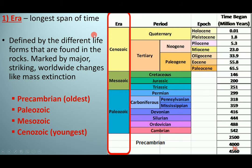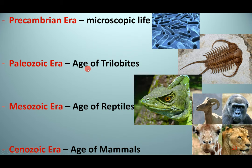An era is the longest span of time. The four eras you need to know are: Cenozoic, Mesozoic, Paleozoic, and Precambrian. The Precambrian is the oldest and lasted the longest. Next is the Paleozoic, then the Mesozoic, and then the Cenozoic — the youngest, which we're currently in. The Precambrian featured microscopic life, the Paleozoic was the age of the trilobites (shelled organisms), the Mesozoic was the age of the reptiles, and the Cenozoic is the age of the mammals.